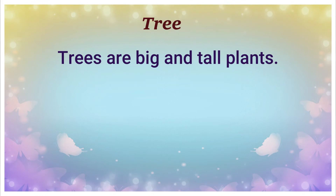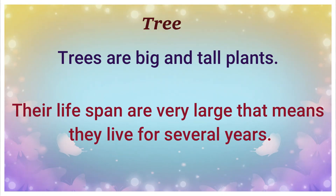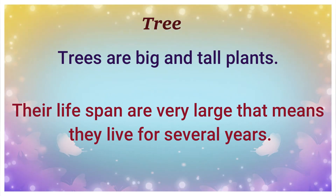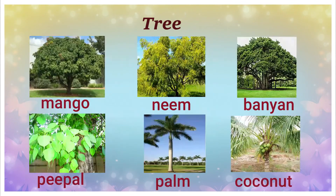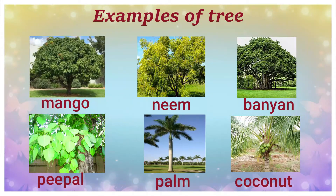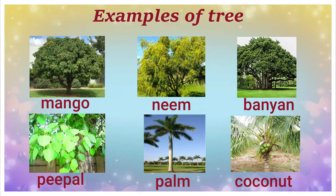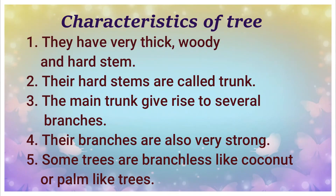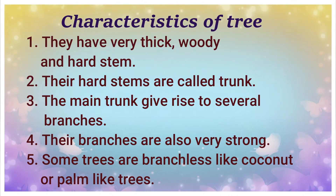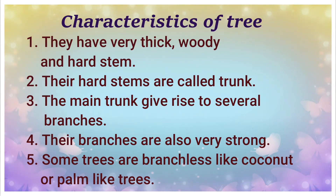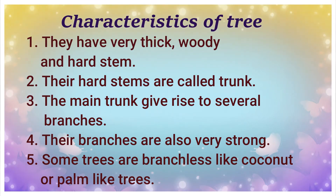The next type is trees. Trees are big and tall plants with a very large lifespan — they live for several years. Examples include mango, neem, banyan, peepal, palm, and coconut trees. Their characteristic features: they have a very thick, woody, and hard stem called a trunk. The main trunk gives rise to several strong branches. Some trees are branchless, like coconut or palm, but they still live for many years.